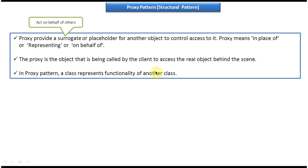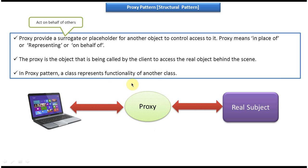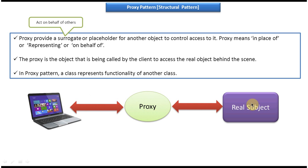I will show you one diagram so that you will understand these explanations. On the left side you can see client, on the right side you can see real subject, and in the center you can see proxy. Suppose this client wants to communicate to the real subject, then it should communicate via proxy, as per the proxy design pattern. So if the client wants to access some methods in the real subject, the client will send a request to the proxy, then proxy will make the request to the real subject.